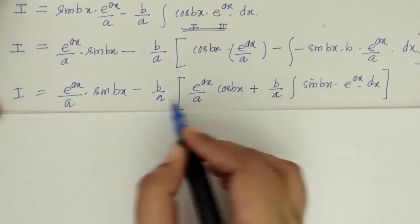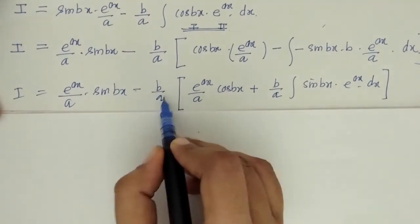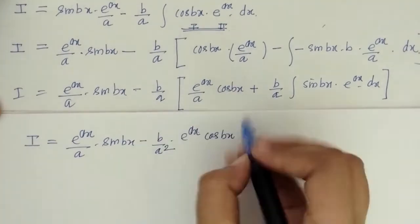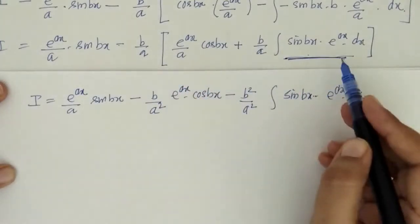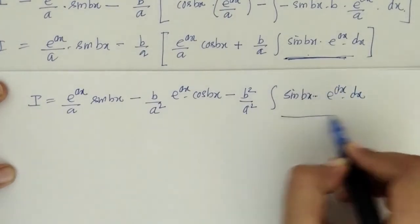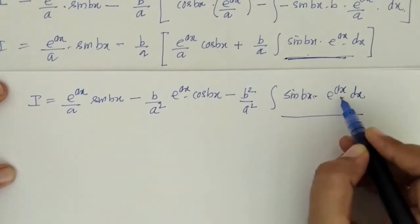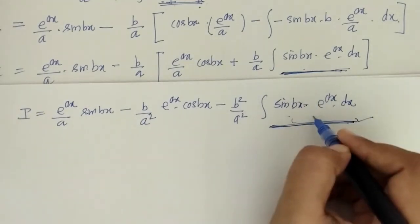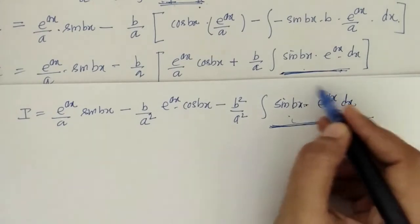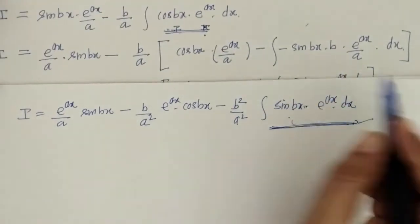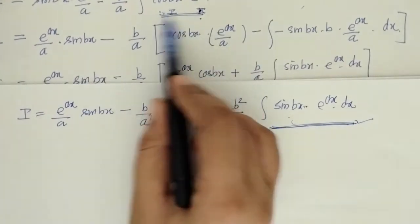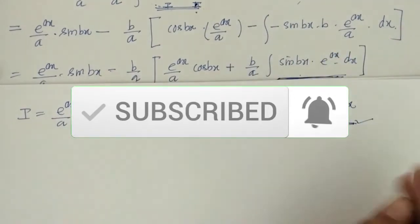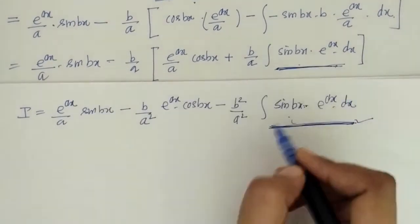Simplifying this bracket, taking −b/a inside, we notice that we again have the integral of sin(bx)·e^(ax). To evaluate that, we must apply integration by parts again, which gives the integral of cos(bx)·e^(ax), and this process is never-ending.